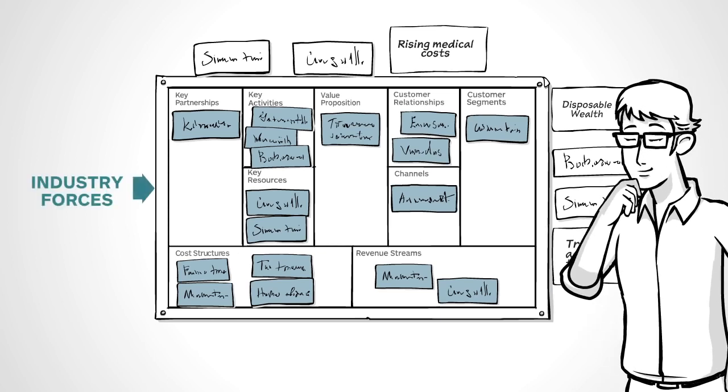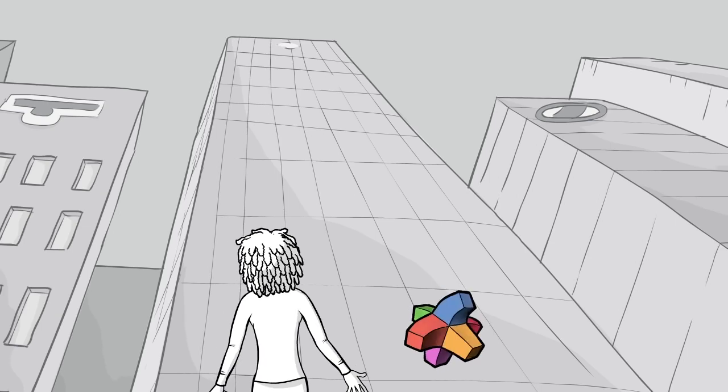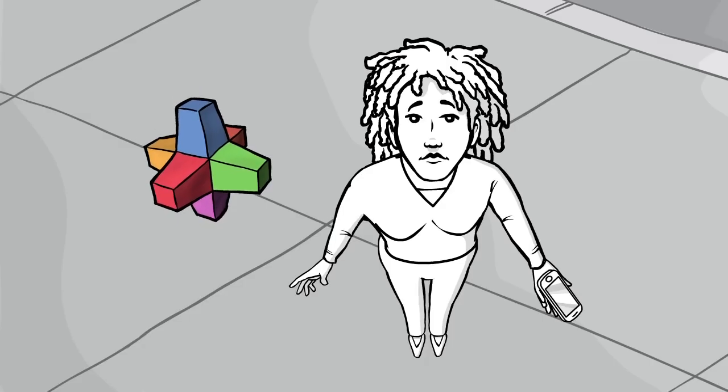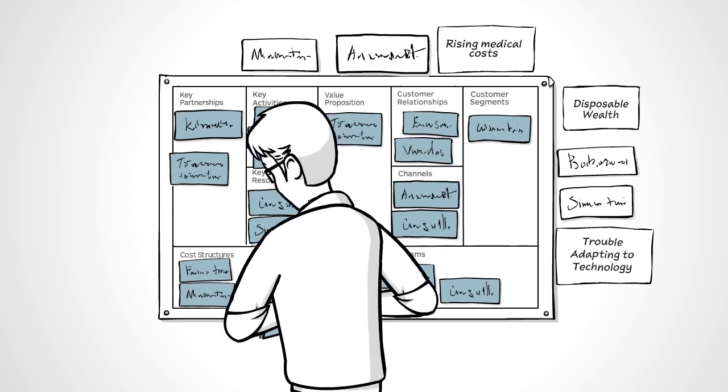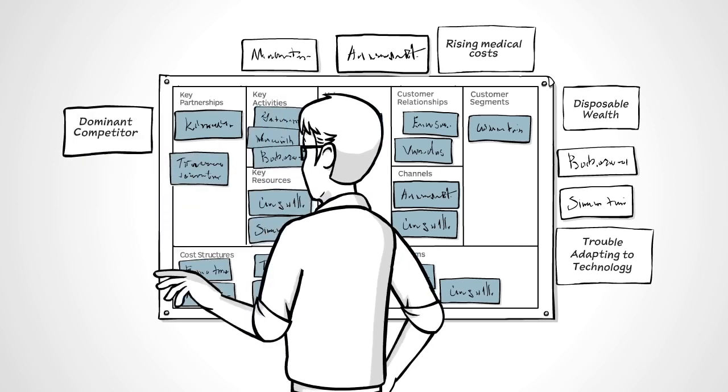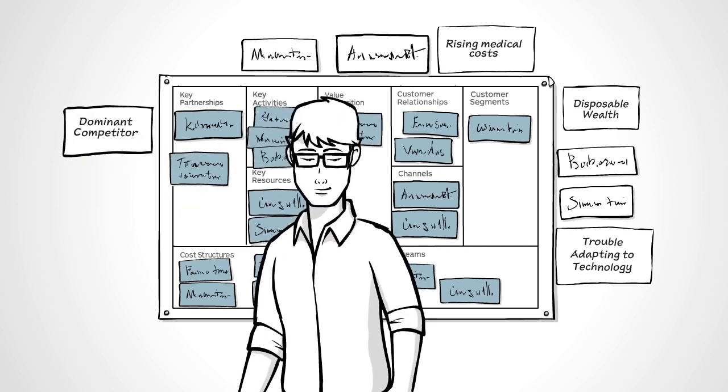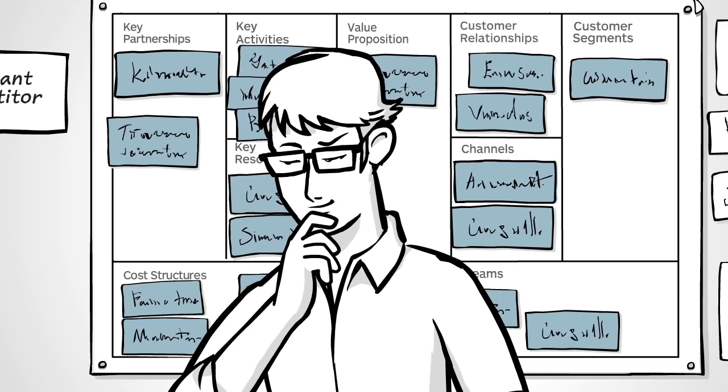Now to the left, map industry forces. Who are your main competitors? What advantages do their business models provide? Could they crush you? Your industry may already have a dominant competitor. But ask yourself, where are their weaknesses? Can you disrupt them?